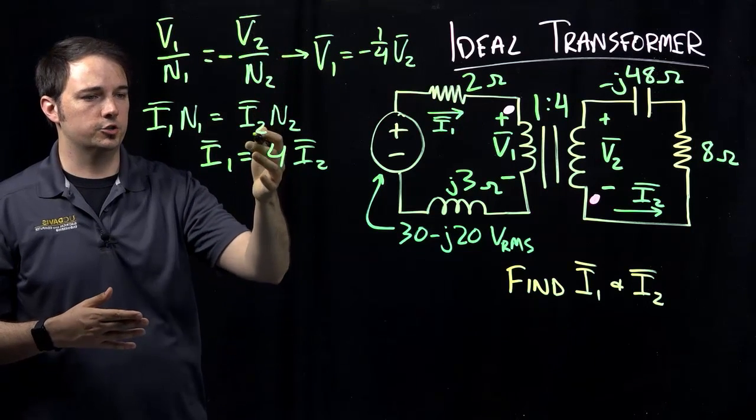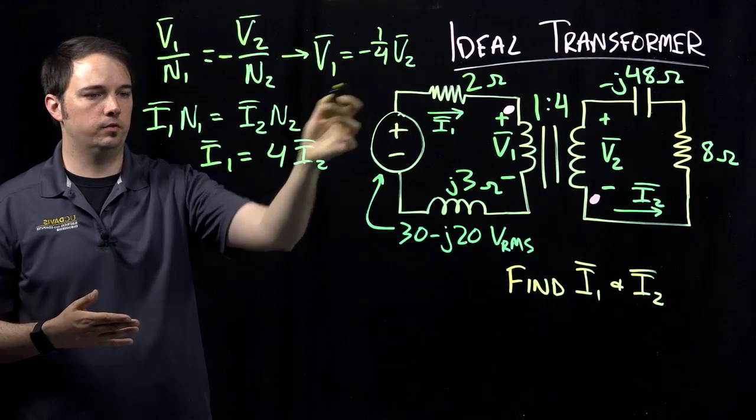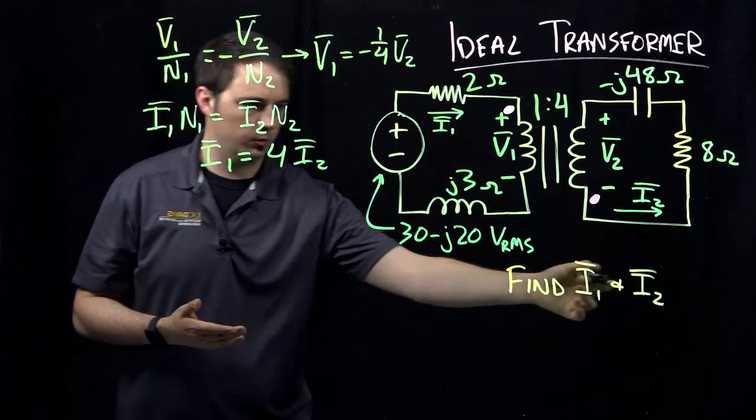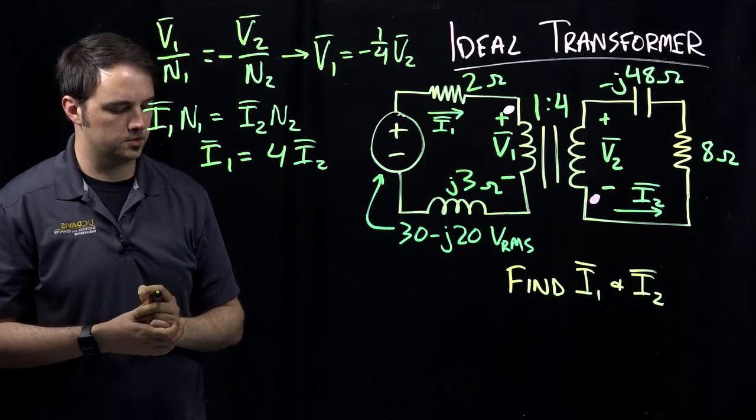Now here still I have two equations, but I still have four unknowns V1, V2, and I1 and I2. So we need more equations to get to some solution. Specifically, let's say if we want to find I1 and I2 here specifically.